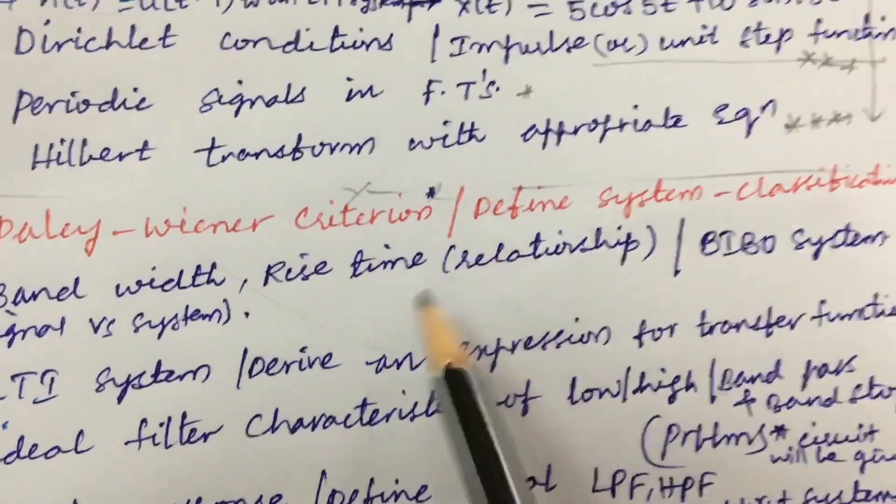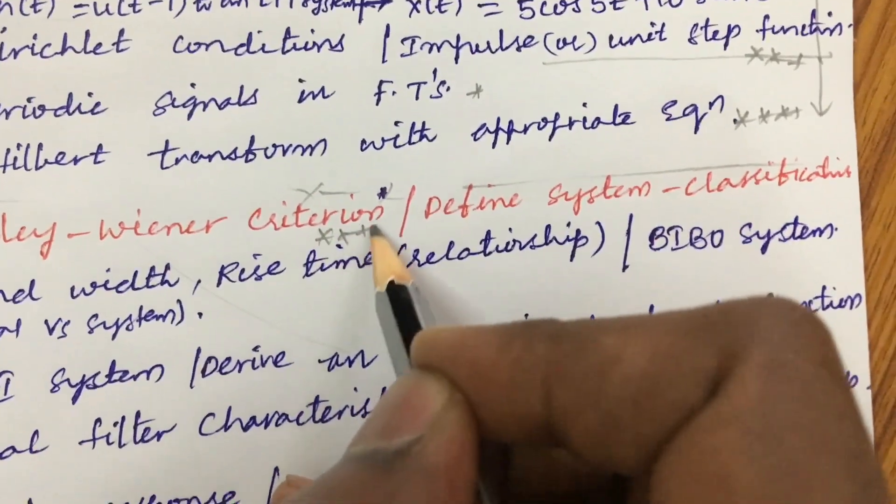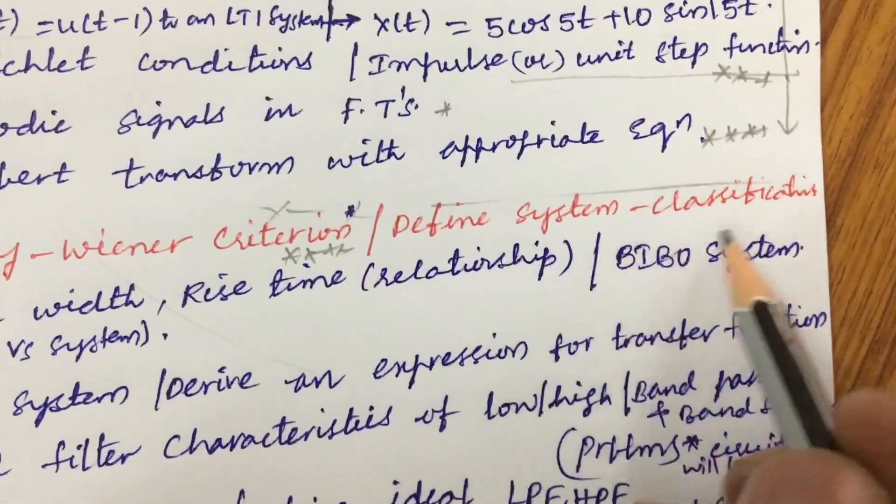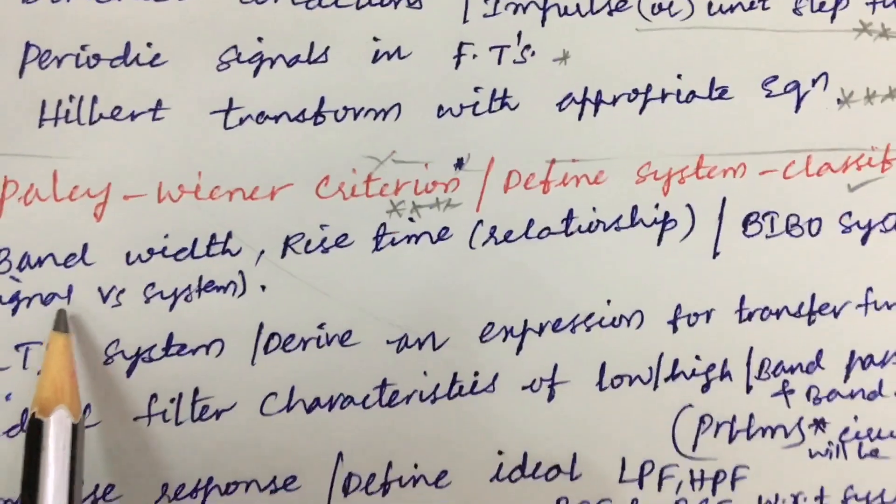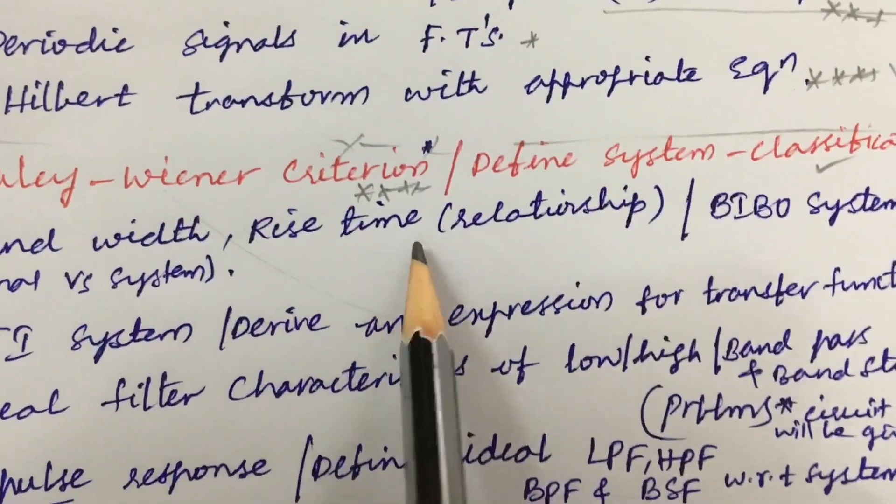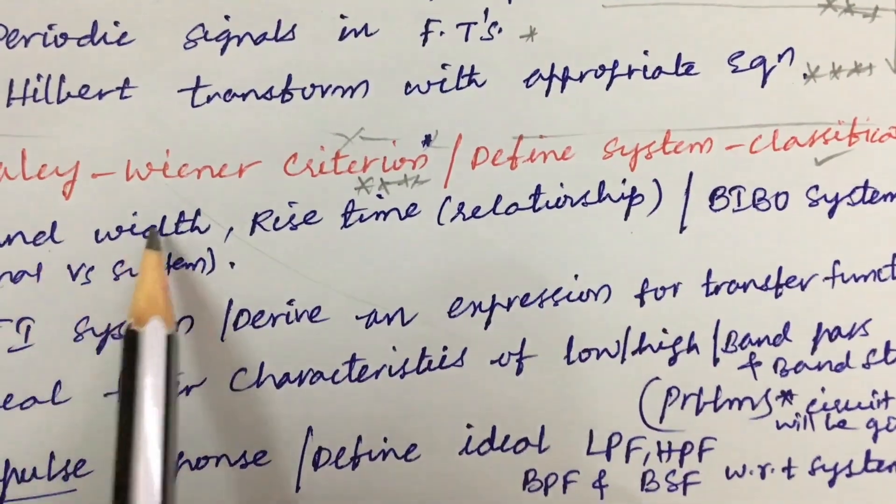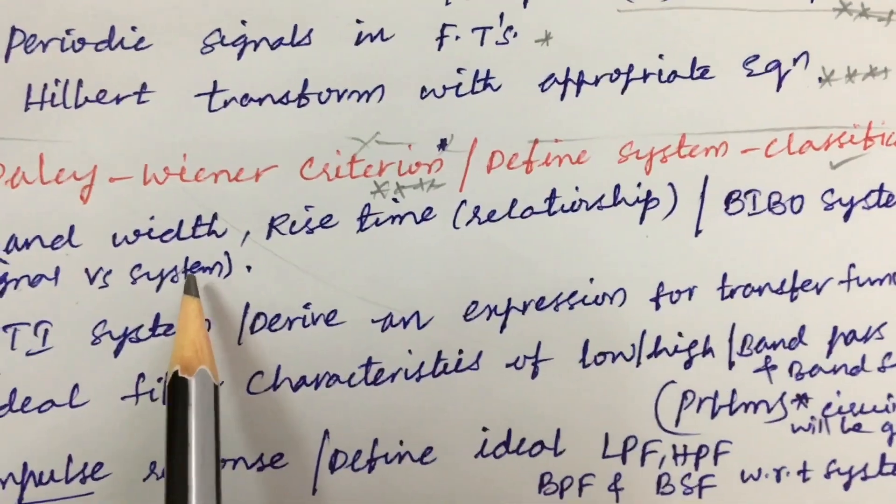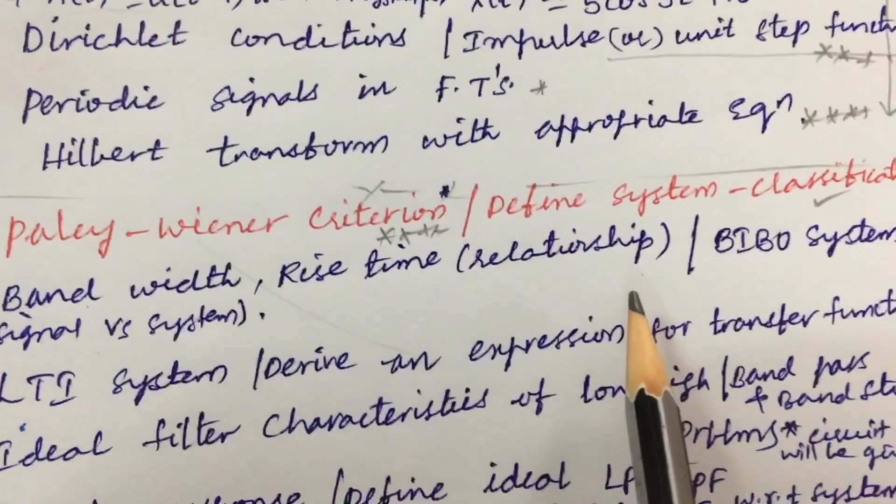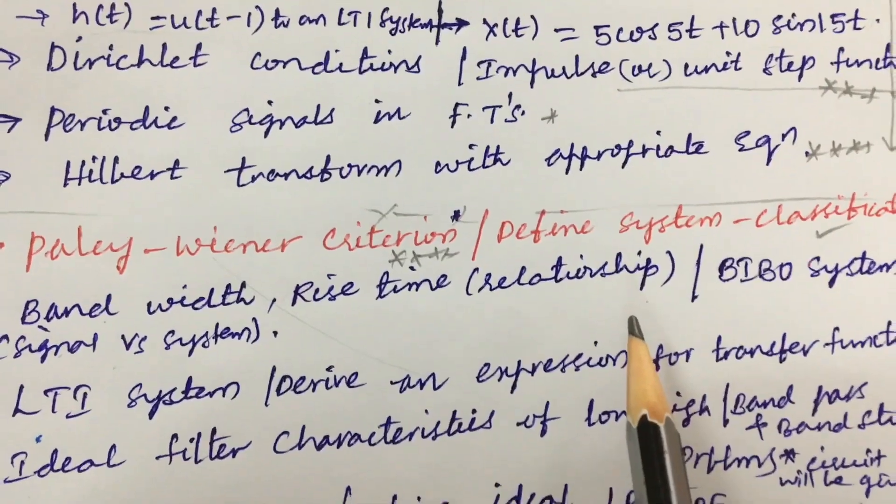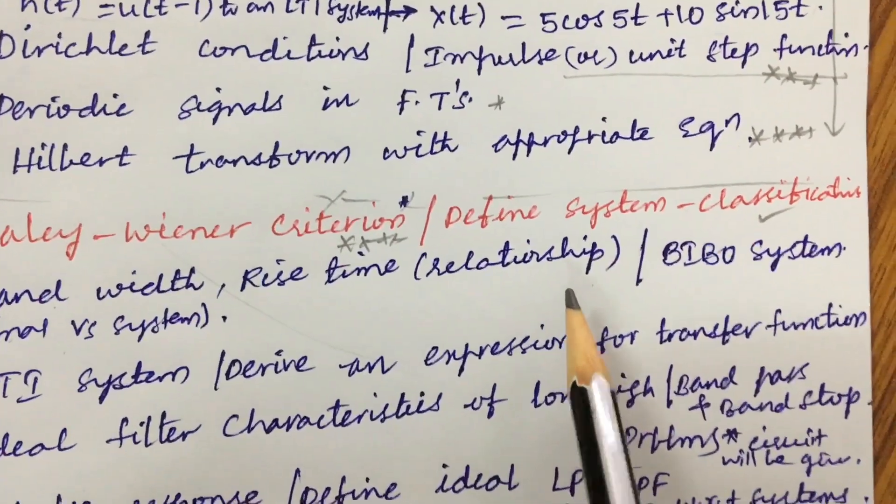Paley Wiener criterion is also one of the very very important gunshot question and define system and its classification. Later bandwidth rise time relationship as well as signal bandwidth as well as system bandwidth the differences. I have uploaded a video on how to take JNTU examination theory paper to score a better mark please do work out.